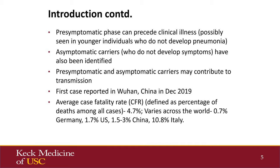In Germany, the mortality rate is only 0.7%. In the US, depending on the study, it's anywhere from 1.7 to 3%. In Italy, it was very high, around 11%. And in China, depending on the study, it was 1.5 to 3%.